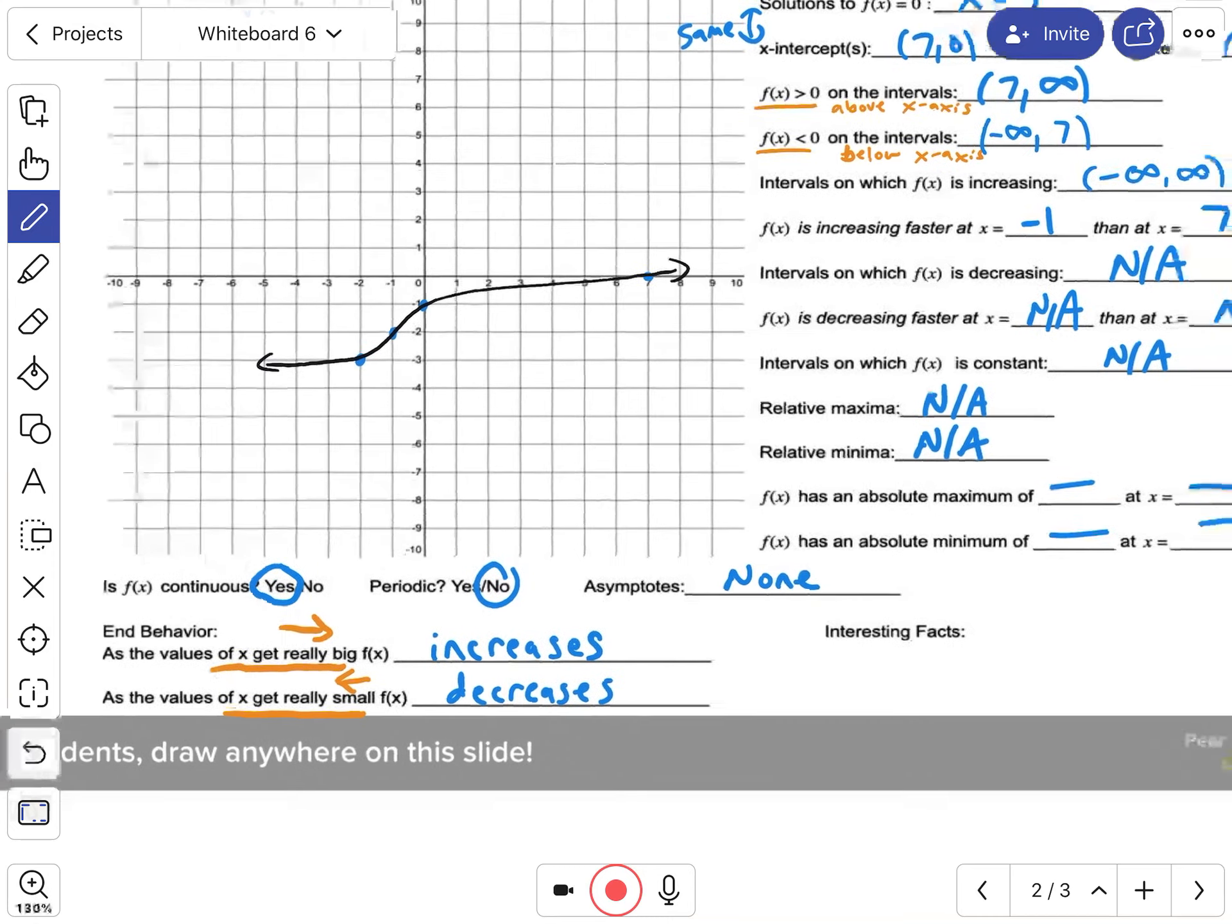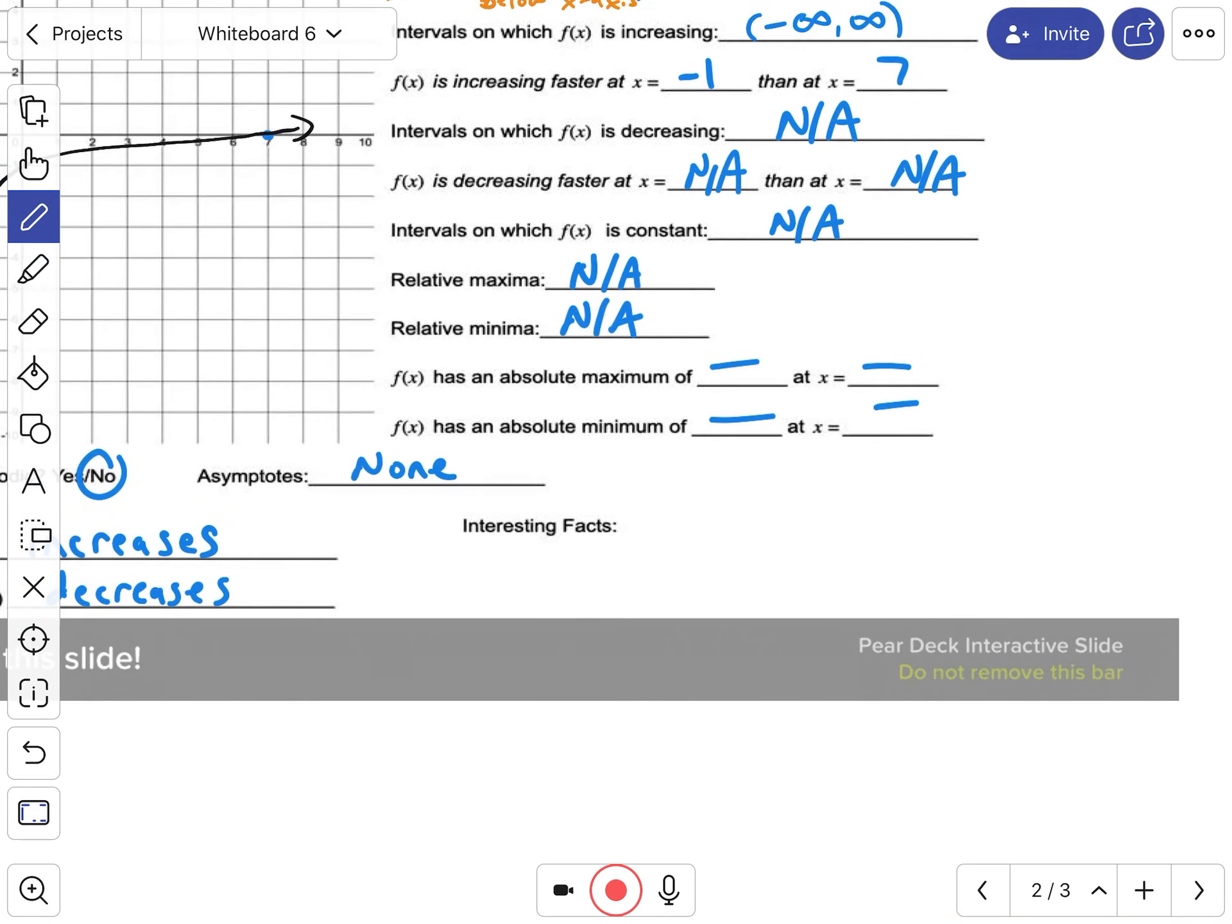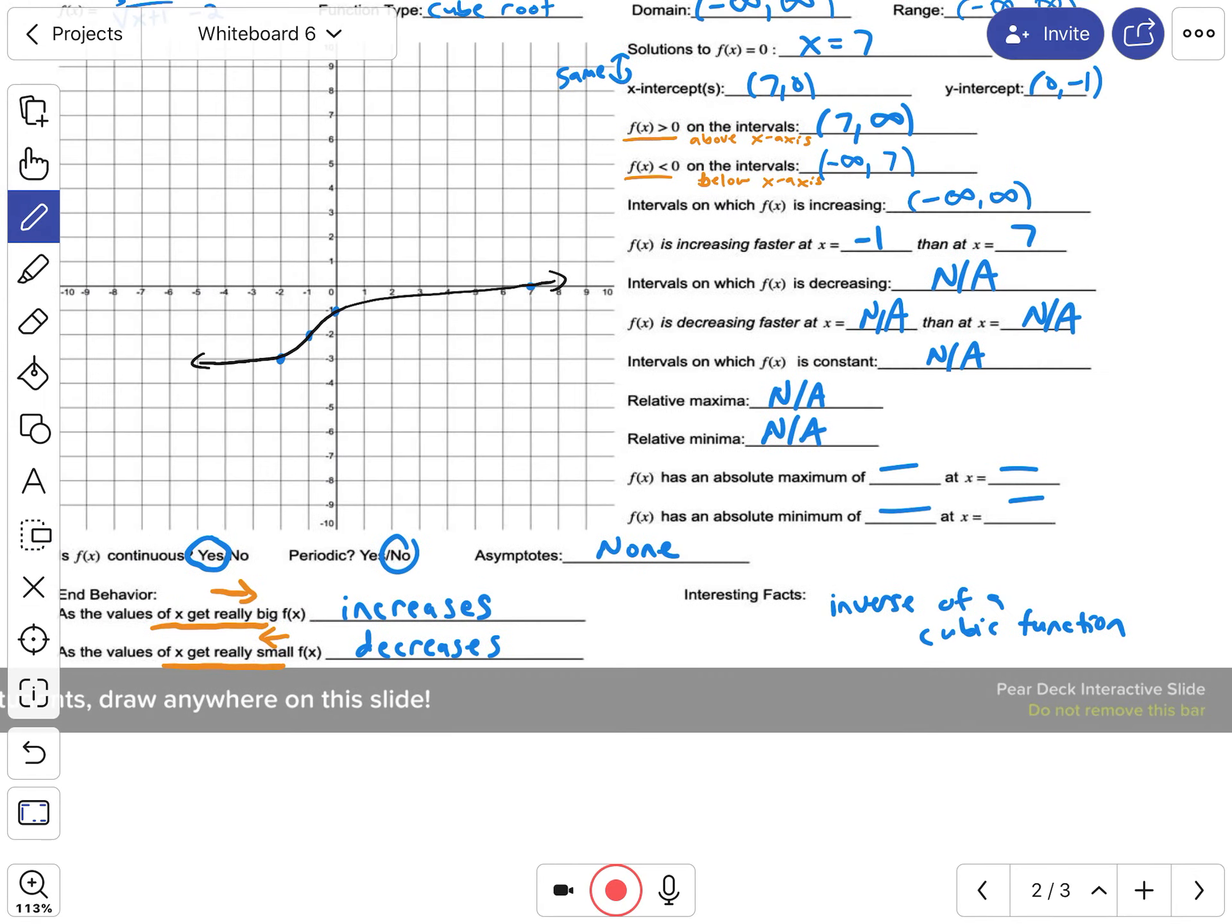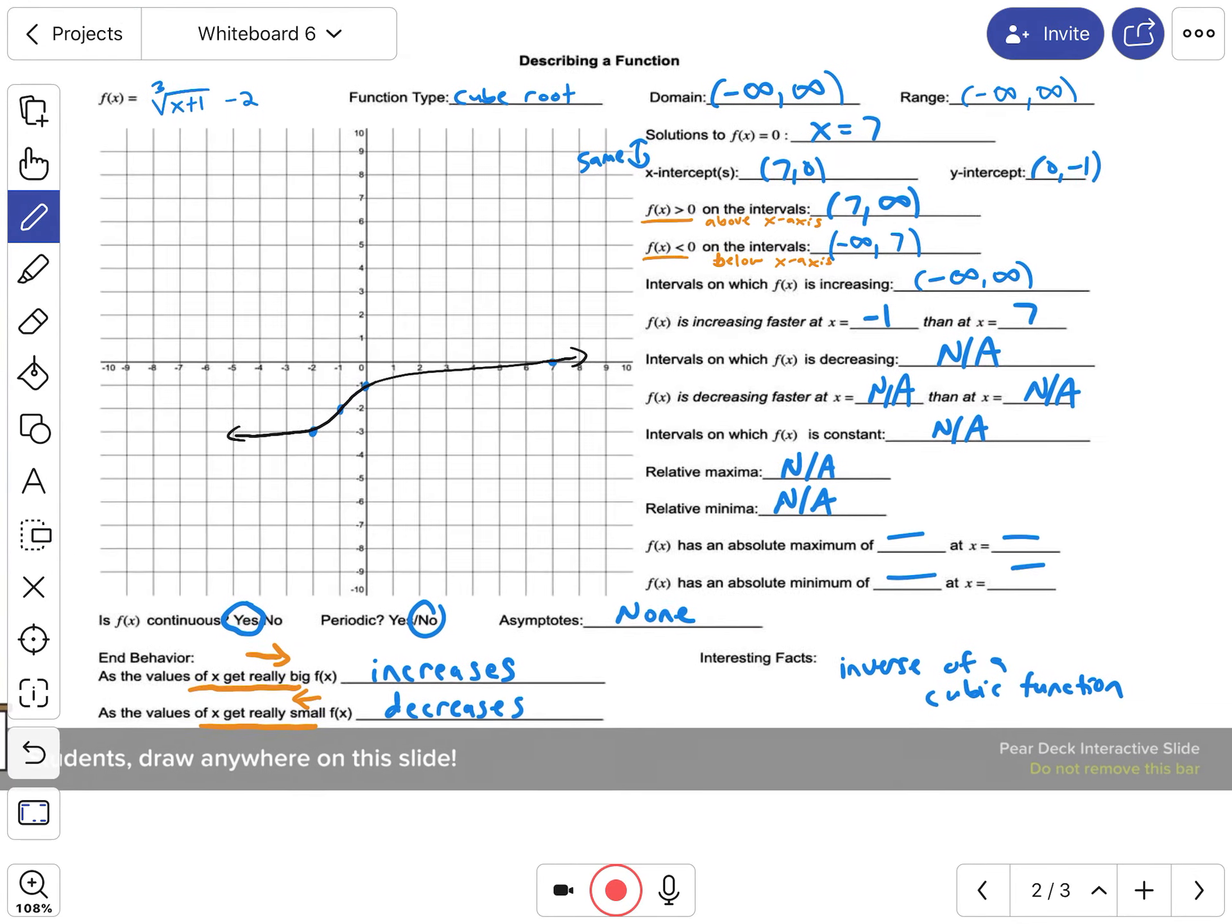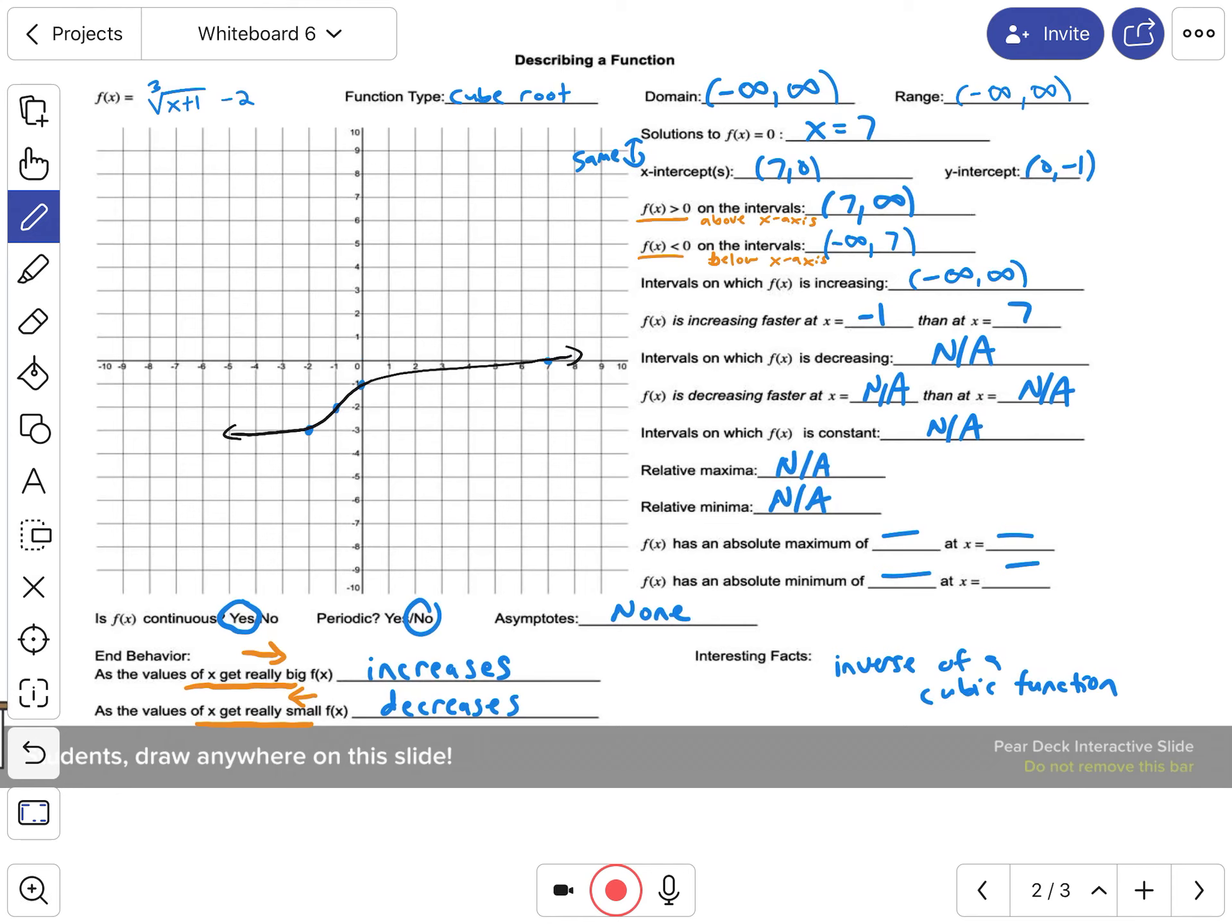And I guess the interesting fact here is that it's the inverse of a cubic function. It has the same shape as a cubic, but it's just transformed a little bit because the cubic would be going more like down, up through here, and then up. But this is looking kind of similar to it, but it's just transformed.